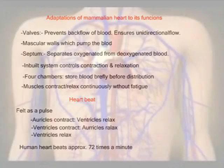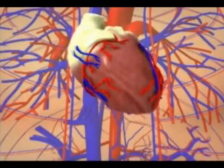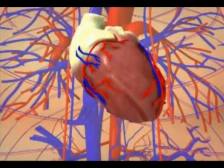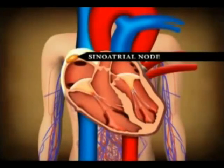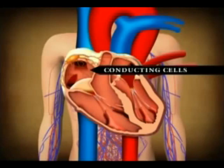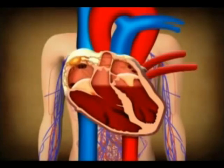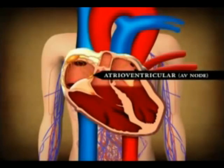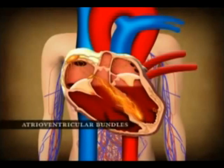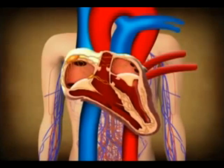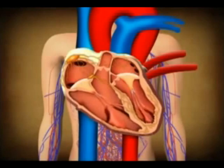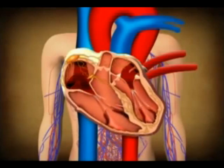The coordinated beating of the heart is accomplished by several tissues. The sinoatrial (SA) node contains pacemaker cells that generate an electrical pulse. Conducting cells relay the signal to the muscle tissues of the right and left atria to stimulate contraction. They also send a signal to the atrioventricular (AV) node, which slows down the relay to the ventricles. After this delay, the signal is sent to the atrioventricular bundles which stimulate contraction of the ventricles. This delay is critical to allow the atria adequate time to contract and force open the AV valve before the ventricles contract.